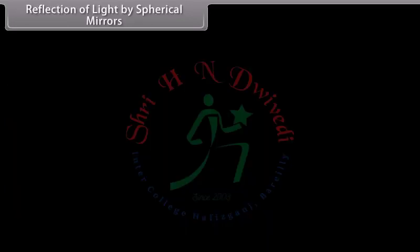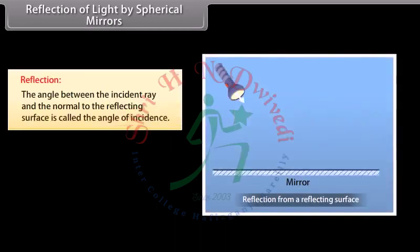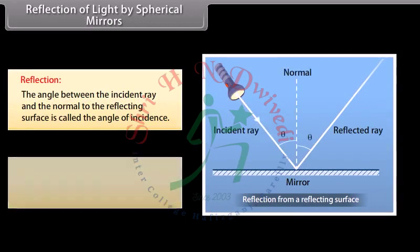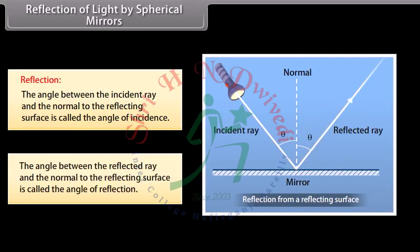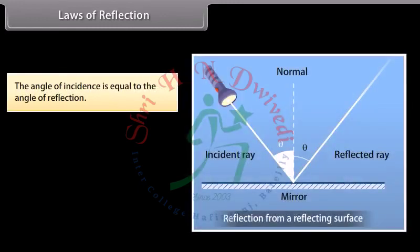Reflection of light by spherical mirrors. The angle between the incident ray and the normal to the reflecting surface is called the angle of incidence. The angle between the reflected ray and the normal to the reflecting surface is called the angle of reflection. Laws of reflection: the angle of incidence is equal to the angle of reflection.